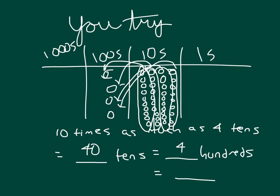And then lastly, you'd write it back in standard form. Four hundreds is worth what? And it's written as 400. Let's read the whole thing together. Remember, 10 times as much as 4 tens is equal to 40 tens, which equals 4 hundreds, which equals 400.